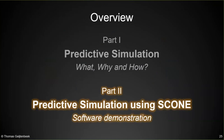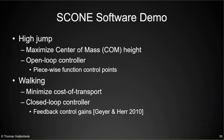That's it for the background on predictive simulation. Let's go to part two, where I will show some examples of how this works. I'm going to show two examples. The first will be a high jump example, which is a nice example for predictive simulation because you can define the objective very clearly by looking at the center of mass height, using an open loop controller with a piecewise function. We'll also demonstrate a walking example based on the feedback-based walking controller by Geyer and Herr, developed in 2010.